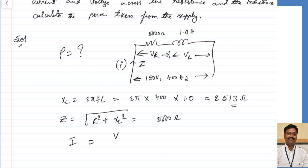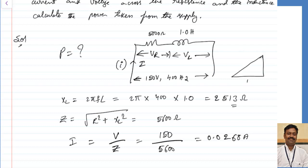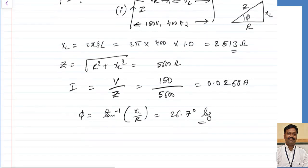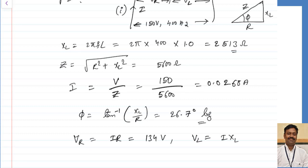Current I = V/Z = 150/5600 = 0.0268 amperes. To represent current in phasor form, I need phi. Using the impedance triangle: phi = tan⁻¹(XL/R) = 26.7 degrees. Since it is an inductive circuit, the current is lagging. Vr = I·R = 134 volts and Vl = I·XL = 67.35 volts.